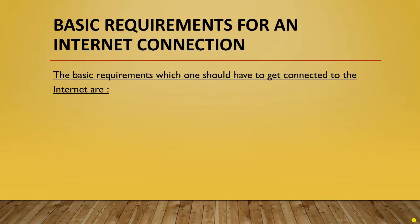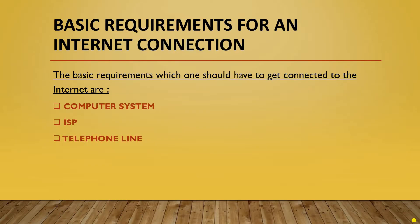Next is basic requirements for an internet connection. The basic requirements which one should have to get connected to the internet are: computer system, ISP, telephone line, modem, and web browser. Now we will discuss these terms in detail.